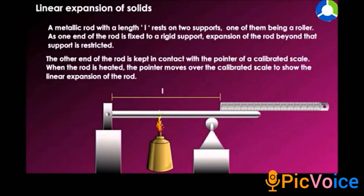Now we can see the experiment for linear expansion of solid. A metallic rod is placed resting on two supports — one of them being a roller and the other end fixed to a rigid support. The expansion of the rod beyond that support is restricted. The other end of the rod is kept in contact with the pointer of a calibrated scale. When the rod is heated, the pointer moves forward over the calibrated scale to show the linear expansion of the rod.